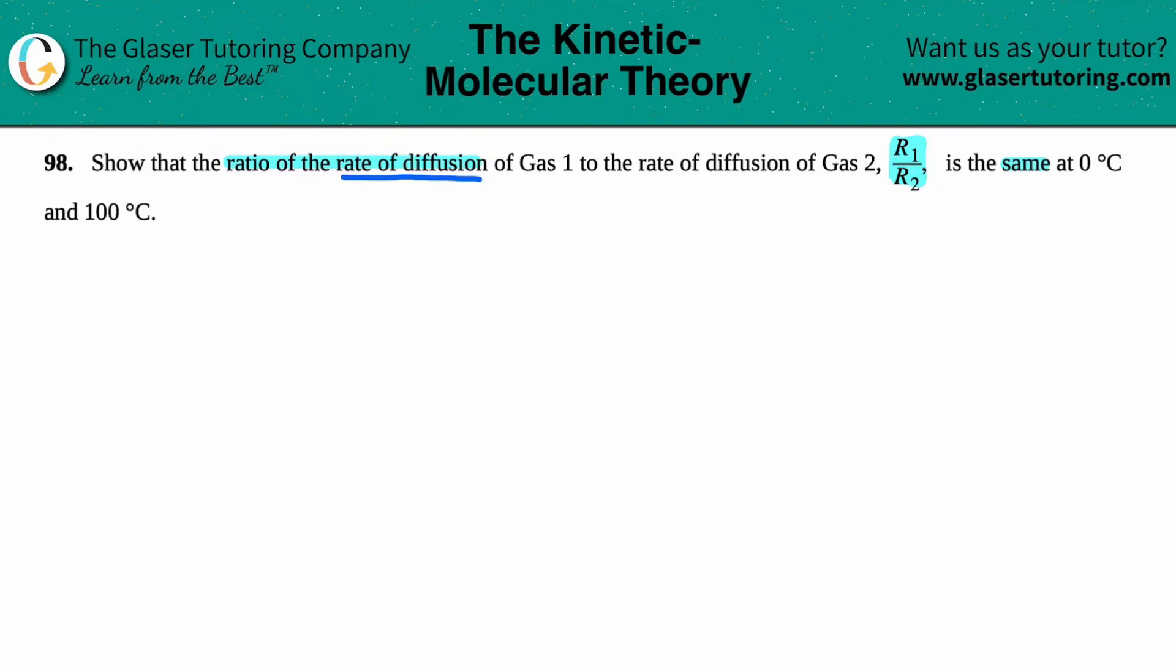But for chemistry, just know that the rate of diffusion is equal to the root mean speed, that type of U. Remember this from a couple of questions ago, this U_RMS, the root mean square speed? So we can say that it's basically proportional. So when we're talking about the rate of diffusion, we're basically just talking about this U value, the root mean speed.